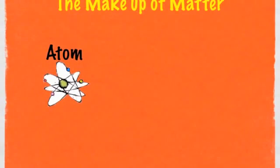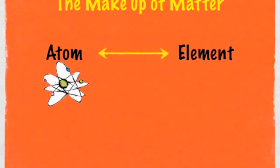The makeup of matter. The purpose of this keynote is for us to take a look at what atoms are and to distinguish between atoms and what's commonly called elements. One of the things we'll look at is what is the relationship, or how are atoms and elements related.